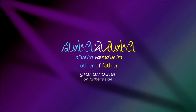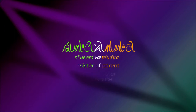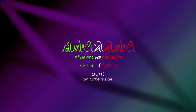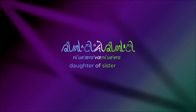With the same pattern, you can also use fai to create words for relatives outside your immediate family. For example, ni-ue-era fai te-ue-ira is the sister of one of your parents — an aunt. The English word aunt can refer to more than one person. Just a small change of the gender particle allows you to narrow it down: ni-ue-era fai ma-ue-ira would be an aunt specifically on your dad's side. And ni-ue-aira fai ni-ue-era is the daughter of your sister — your niece.